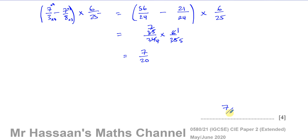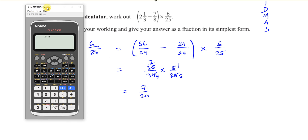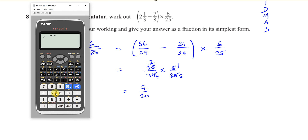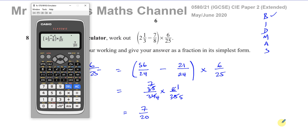The answer is 7 over 20. At the end of an exam, you can use your calculator to check — enter 2 and 1 third, minus 7 over 8, times 6 over 25 — and it gives 7 over 20, confirming you haven't made a silly mistake. But if you just wrote that answer using the calculator from the beginning, you would lose all four marks.